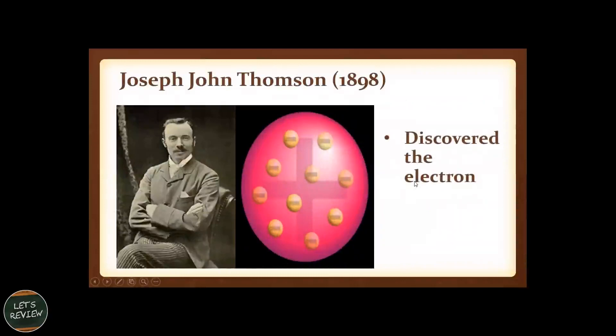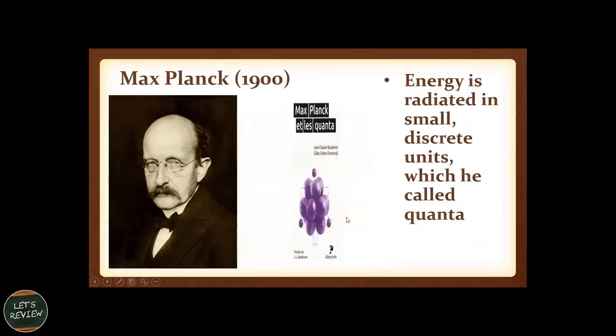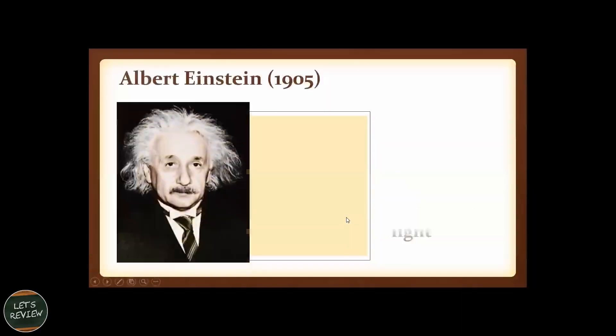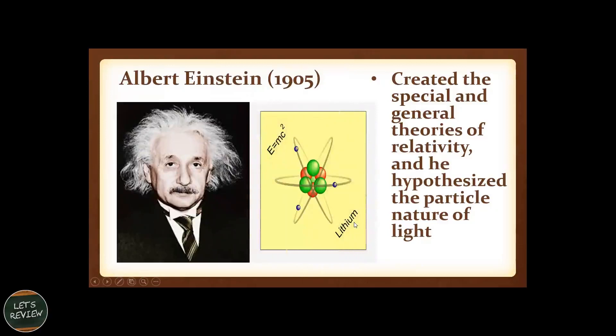Now, 1898, the one who discovered the electron is Joseph John Thomson. Followed by 1900s Max Planck. He said that energy is radiated in small, discrete units, which he called quanta. And then Albert Einstein created the special and general theories of relativity and hypothesized the particle nature of light.